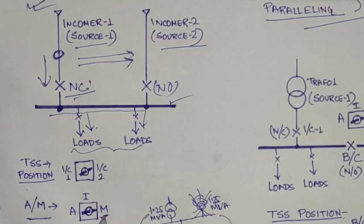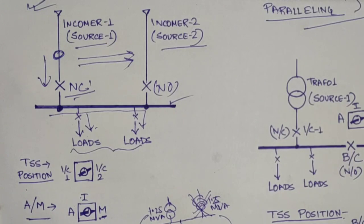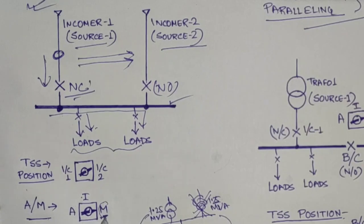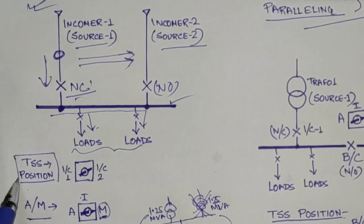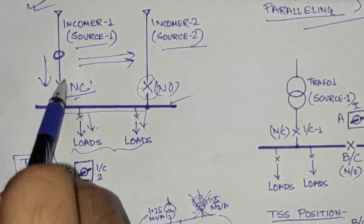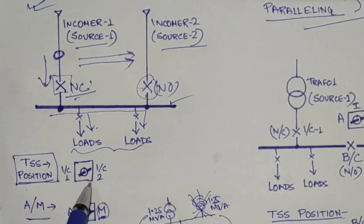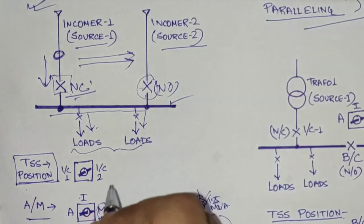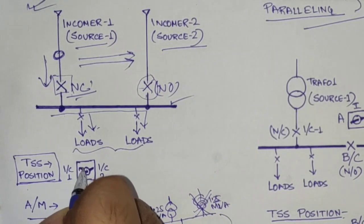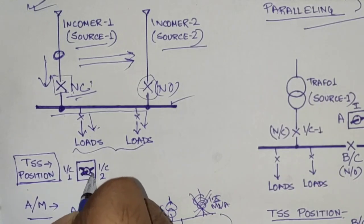The auto-manual switch shall be at manual position, allowing the operator to manually switch a breaker on or off. There is another selector switch called the Trip Selector Switch (TSS). When Incomer 2 is closed, the two sources will come in parallel momentarily, so one breaker must be tripped. Since Incomer 1 is currently closed and we want to shift load to Incomer 2, the trip selector switch will be set to the Incomer 1 position — because Incomer 1 is the one to be tripped.